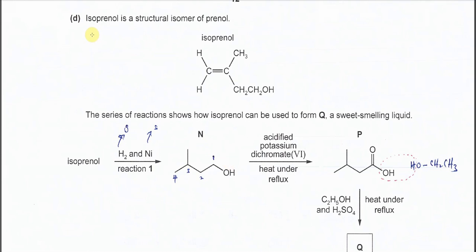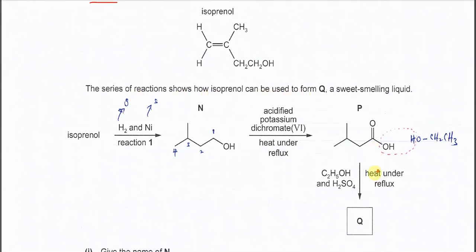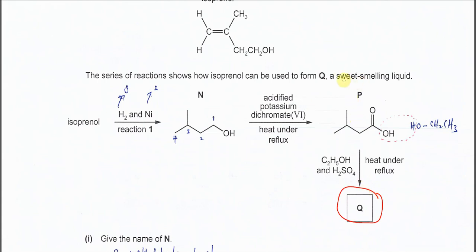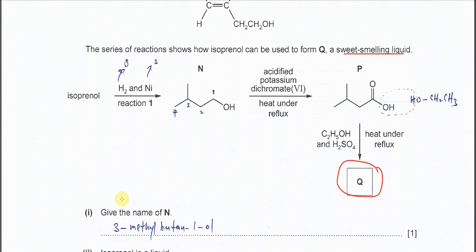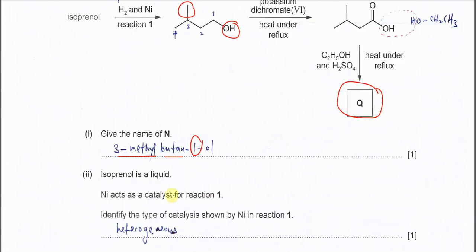D, isoprene is a structural isomer of prenol. And the series of reactions shows how isoprene can be used to form Q. The last one, a sweet-smelling liquid means ester. Part one, give the name of N, very easy. So this is the first carbon, second, third, fourth. So this one is the methyl group and it's bonded to the third carbon, so it's 3-methyl. The carbon main chain is four carbon, so it's butane-1-ol. OH bonded to the first carbon, so it's butane-1-ol.